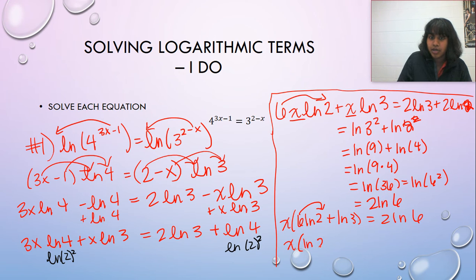This becomes the natural log of 2 to the 6 plus the natural log of 3. And because that's the opposite of the product rule, I can put those together. The natural log of 2 to the 6 times 3 is equal to 2 ln of 6.